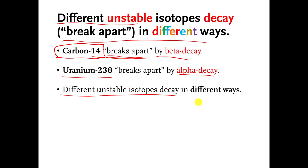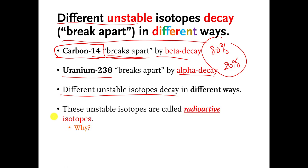A lot of unstable isotopes decay by a combination of different kinds of decay. So you might have some unstable isotope that does 80% beta decay and 20% alpha decay. Things can get kind of messy with these types of decays, but we just present you with relatively simple types of decays because you don't need to know the super complicated stuff.